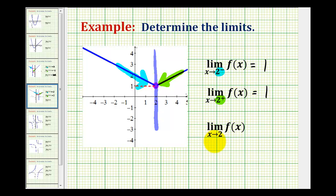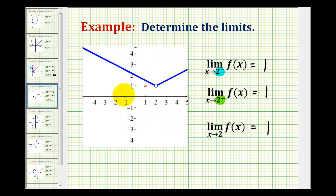So for this last limit when x approaches positive 2 from both sides, since both one-sided limits were the same, the limit as x approaches 2 of f of x is also equal to positive 1. Notice how even though this function does not exist at x equals 2, the limit did exist, because the idea is what function value we're approaching, not what it's equal to at 2.